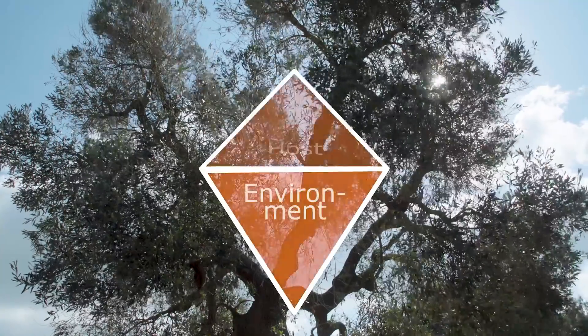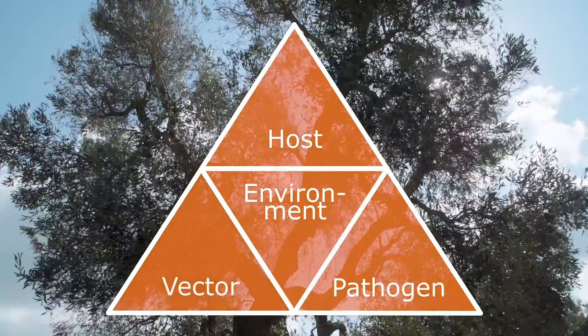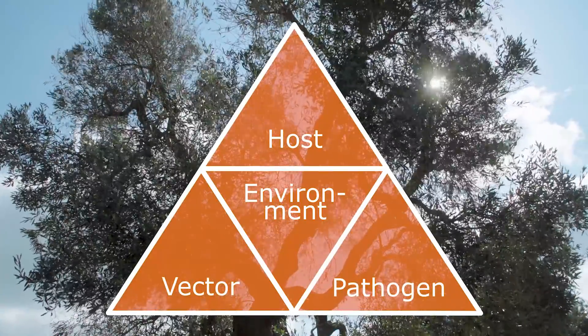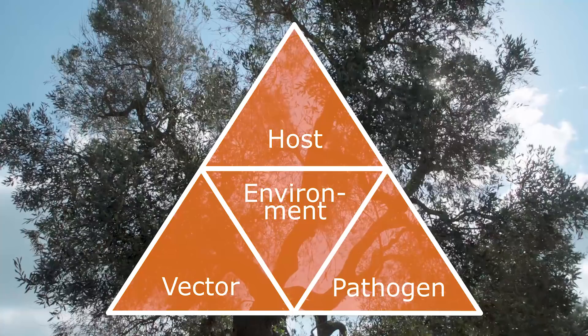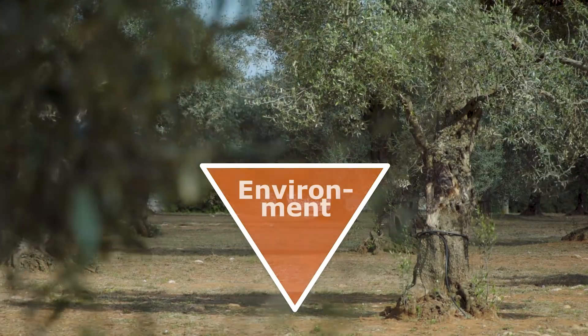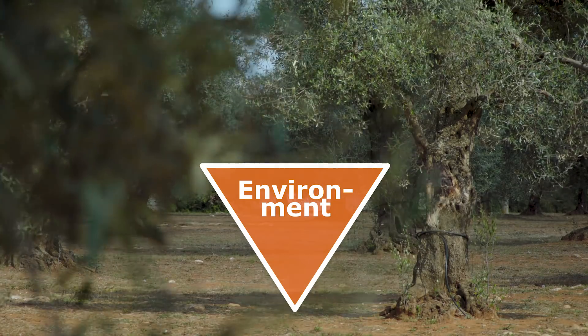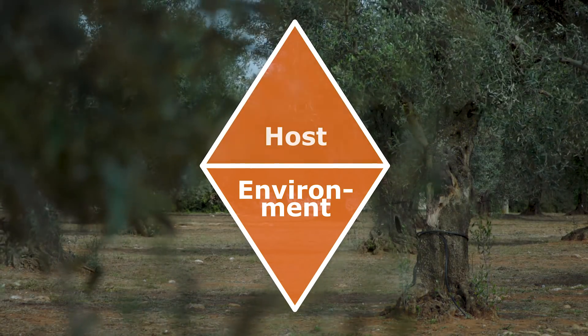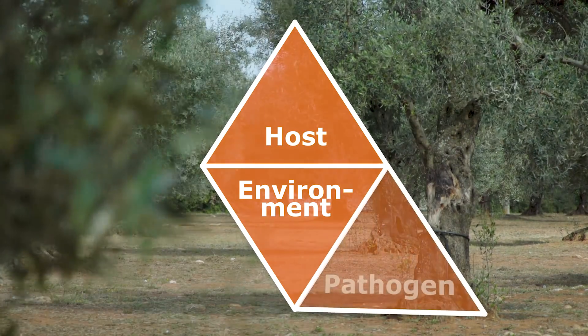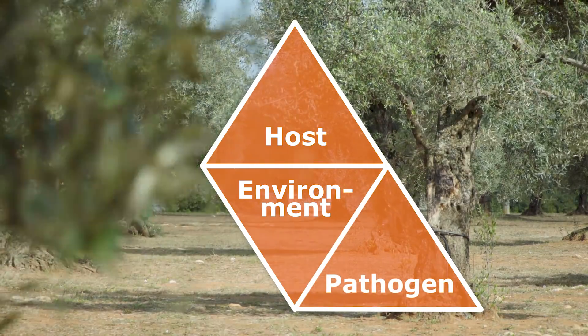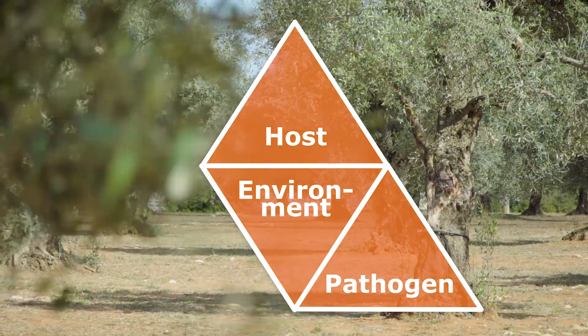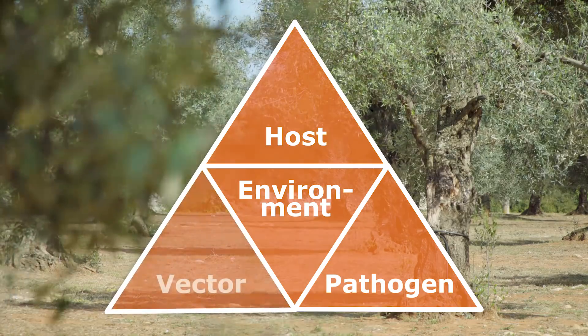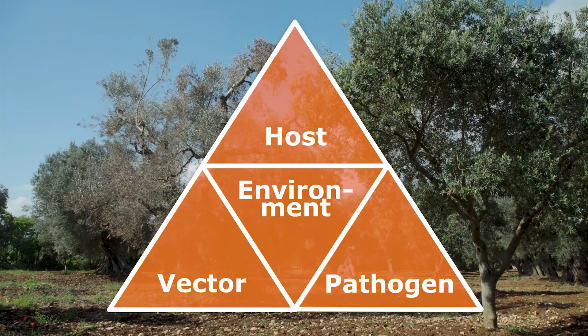Four key elements, known as the epidemiological triangle, demonstrate how the bacterium is transmitted and causes disease. Generally in plant pathology, the disease is defined as the interaction of the environment in which the plants are grown, the host — the plants — and the pathogen. And in addition, if the pathogen is transmitted by a vector, there is also the interaction with the vector.